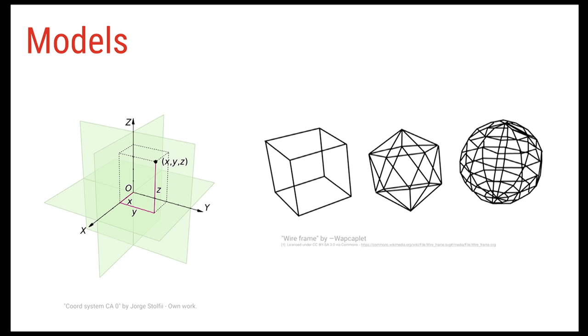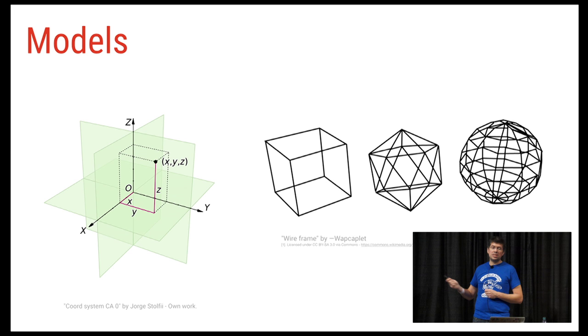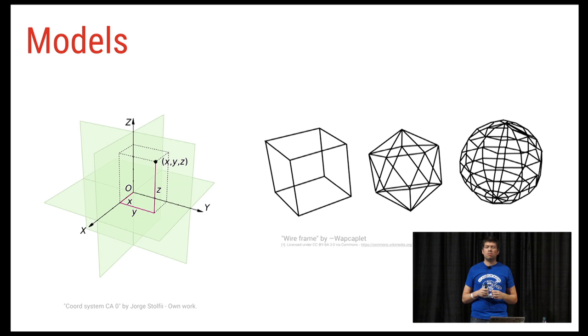Let's talk about models — these are wireframe models. As probably a lot of you know, models are composed of vertices that form triangles that form the model. The important point is that when you create a model — say we're going to talk about a cube — the coordinates of the vertices are going to be around the 0, 0, 0 origin. So everything is always going to be relative to the origin, more for management reasons, as we'll see a bit later.